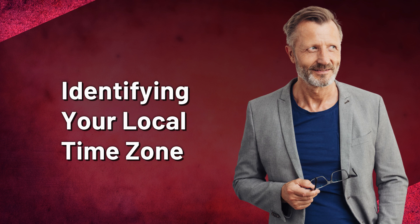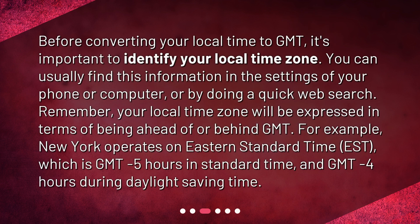Identifying your local time zone. Before converting your local time to GMT, it's important to identify your local time zone. You can usually find this information in the settings of your phone or computer, or by doing a quick web search. Remember, your local time zone will be expressed in terms of being ahead of or behind GMT. For example, New York operates on Eastern Standard Time, EST, which is GMT minus 5 hours in Standard Time, and GMT minus 4 hours during Daylight Saving Time.